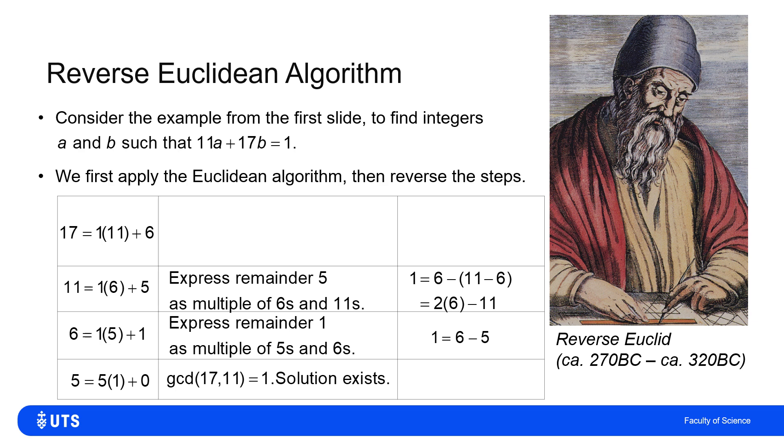I've now got 1 in terms of 6s and 11s, so I can replace the 6s with 17s and 11s. I start with the fact that 1 is 2 lots of 6 minus 11. Instead of having 2 6s, I've got 2 lots of 17 minus 11 and the minus 11 at the end. When I tidy that up, I get 1 is 2 lots of 17 minus 3 lots of 11, which is exactly what we got by inspection at the start. Thank you, reverse Euclid.